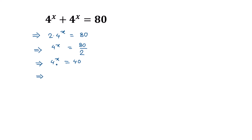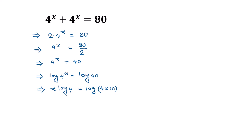Now taking log of both sides, we can write log of 4 to the power x is equal to log of 40. According to the law of logarithm, log a to the power b is equal to b log a, so we can write x times log 4 is equal to log of 40. This can be written as log of 4 times 10.